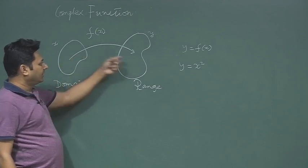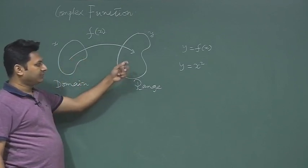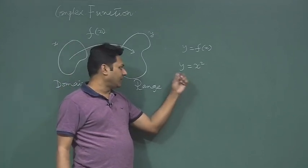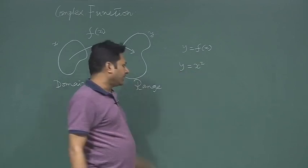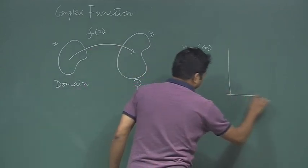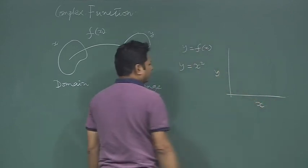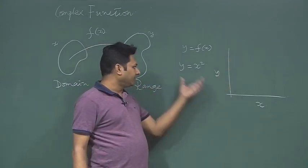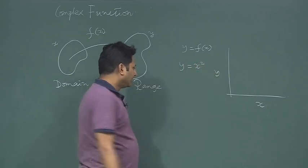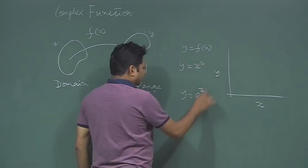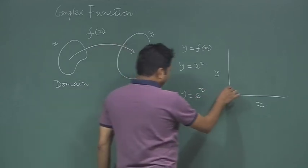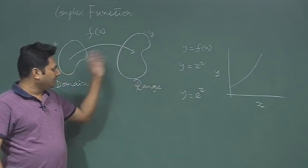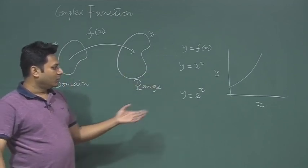For example, y = x². I take one x value, I square it, and I get another point. For every x I can plot y. If I plot it, I will have a parabola. If I have y = eˣ, I will have a different kind of function. In the real case I can always plot one variable with respect to another.